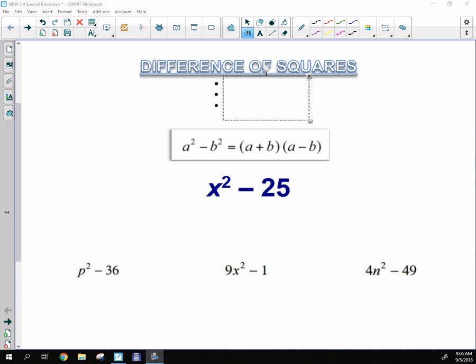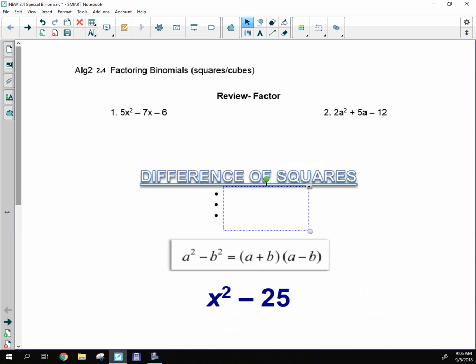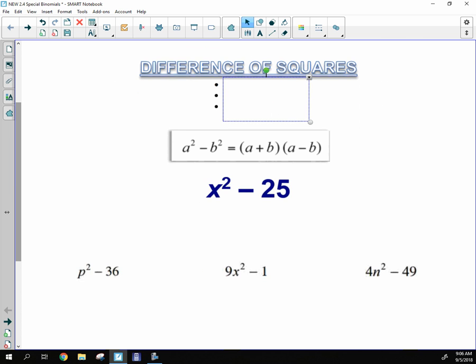So now what we're going to do is take a look at special binomials. A special binomial—look right here in the title—a binomial just means two terms. So there are two different types that we're going to talk about. We're going to talk about squares and cubes. So we're going to start off with the difference of squares and talk about what the features of that problem look like.